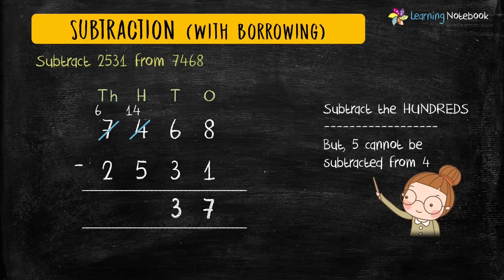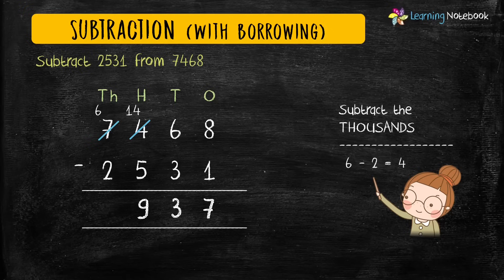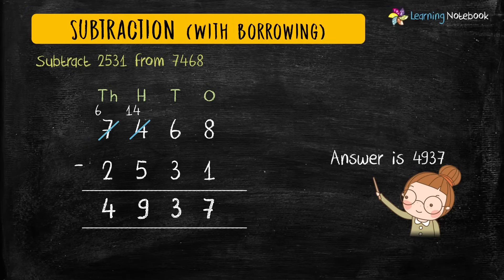Now we can easily subtract the digits at hundreds place: 14 minus 5 equals 9. In the end, let's subtract the digits at thousands place: 6 minus 2 equals 4. So our answer is 4937. This is how we do subtraction of four-digit numbers with borrowing from thousands place.